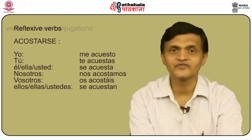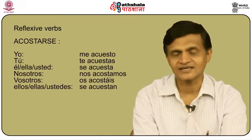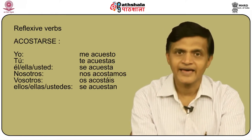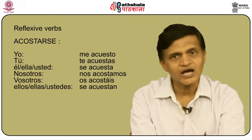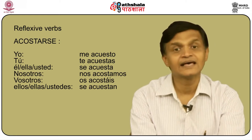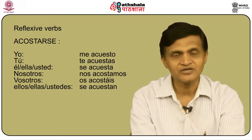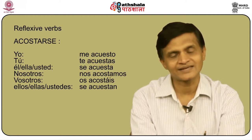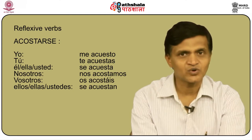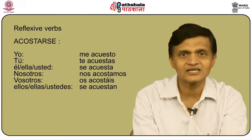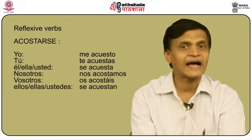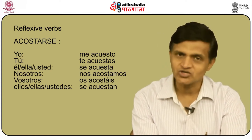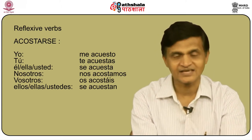Let us start with the conjugation of reflexive verbs. Reflexive verbs like 'acostarse' are conjugated as follows: yo me acuesto, tú te acuestas, él/ella/usted se acuesta, nosotros nos acostamos, vosotros os acostáis, ellos/ellas/ustedes se acuestan. Remember that 'me acuesto' is an integral unit — you cannot put anything in the middle or remove the reflexive pronoun.